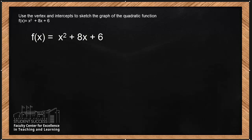Remember, we're letting our function equal zero. Going back to our function, it's x squared plus 8x plus 6. We have to make it zero. We're looking for the x-intercepts — we want to know what is x when the y, the function, is zero. So now we have x squared plus 8x plus 6 equals zero. Notice we have a quadratic equation, and you can solve this either by completing the square, using the quadratic formula, or factoring.